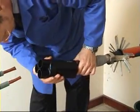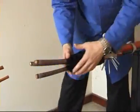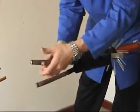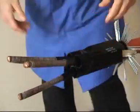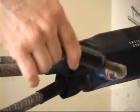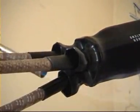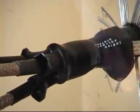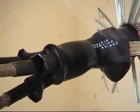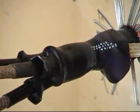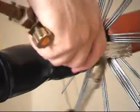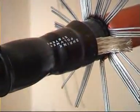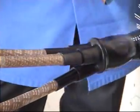Slide the three core conductive breakout over the cores and push well down into the crutch. Start by shrinking from the middle of the breakout, shrinking the skirt down to the lead sheath and then the legs to the cores.